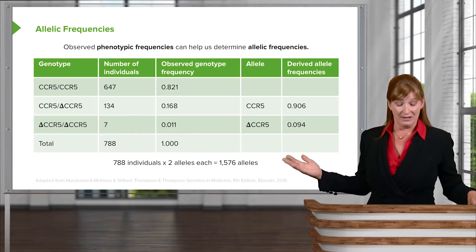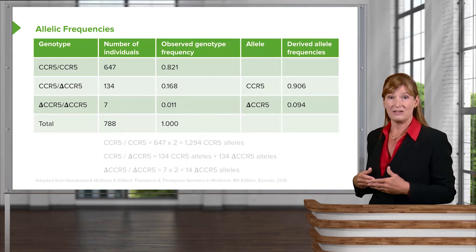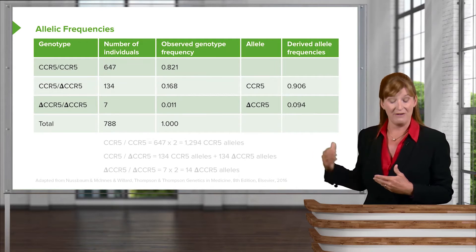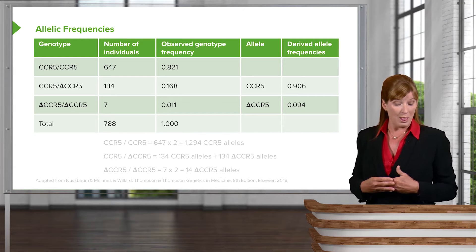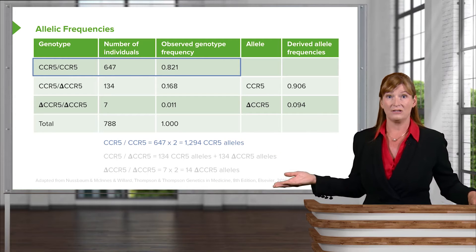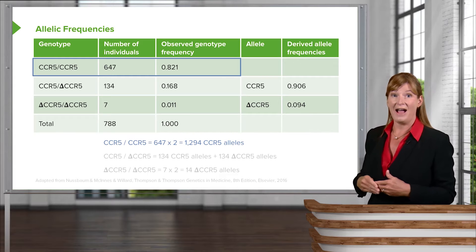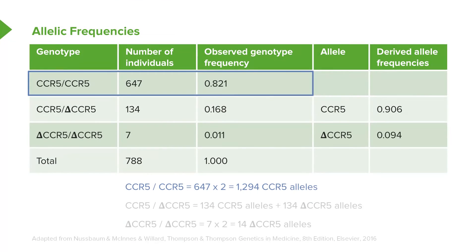Let's look at how we might start to calculate the frequency of alleles in the population based on the number of alleles present. First, let's look at the CCR5 regular wild-type form of the gene. There are 647 individuals with that genotype. We multiply that by two, because each of them contributes two of the same allele, and we end up with 1294 CCR5 alleles. The numbers here are not what's important — it's the method for calculating the frequency or number of alleles.